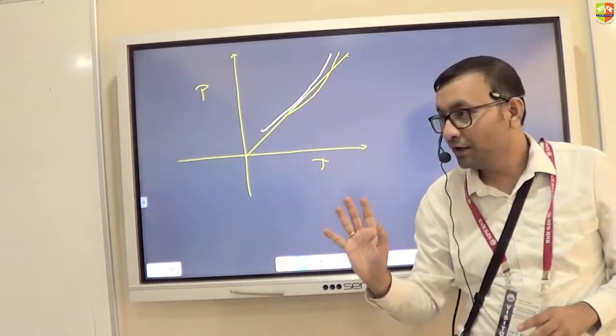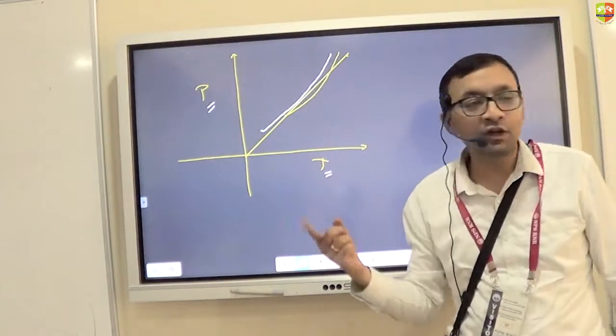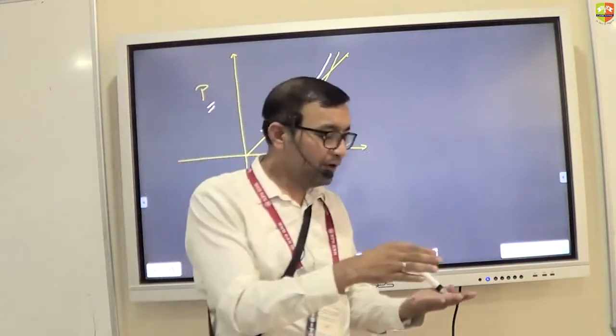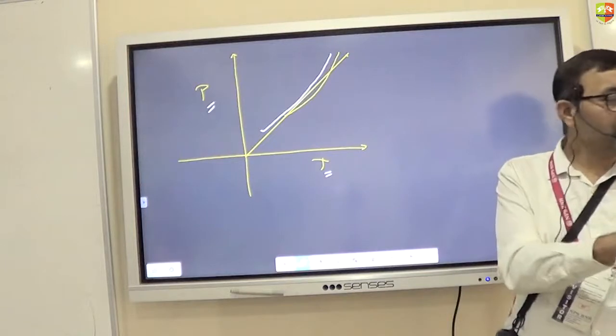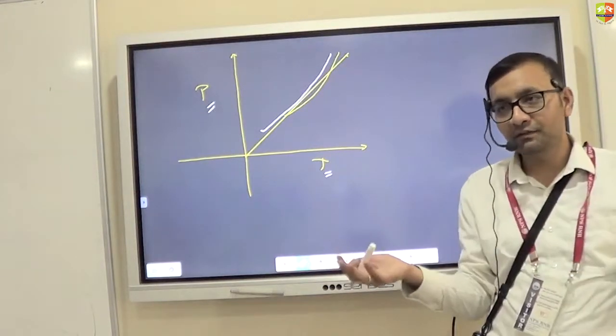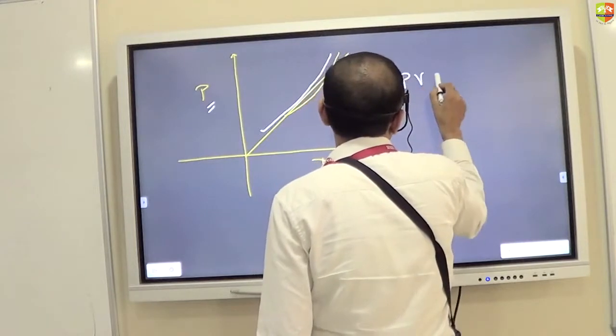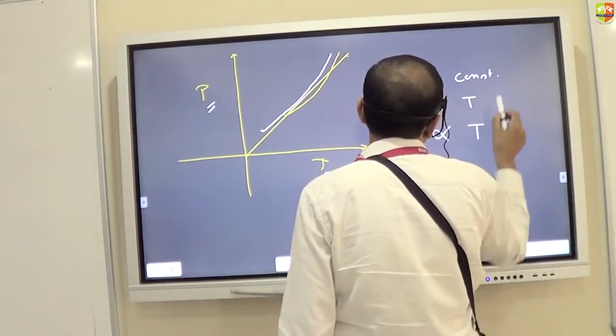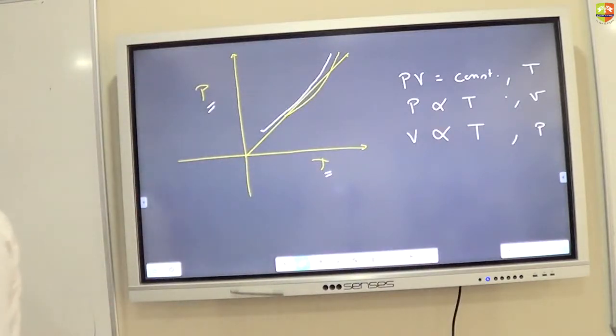If pressure is constant. Are you getting it? Whenever I am plotting two variables, I am keeping third variable constant. When I am plotting pressure and temperature, which is constant? Volume is constant. And when I say volume is proportional to temperature, pressure has to be constant. Because you can keep everything inside a pressure cooker, keep volume fixed and increase the temperature. Then only pressure will be proportional to temperature. But if pressure is constant, sorry, the volume is constant, volume will not increase because pressure is not kept constant. You are getting it? The three relations we have seen. PV is constant. Write down. Pressure is proportional to temperature and volume is proportional to temperature. At constant volume, at constant pressure, at constant temperature. You might have done this already in chemistry. Boyle's law, Charles' law and what other? Gay-Lussac's law.